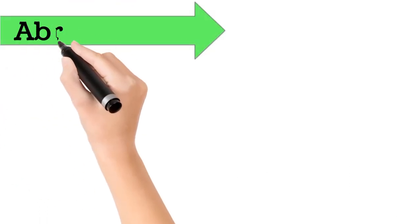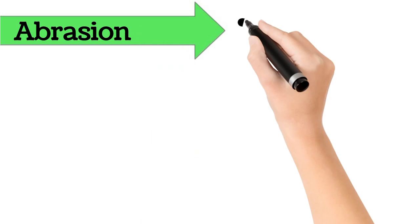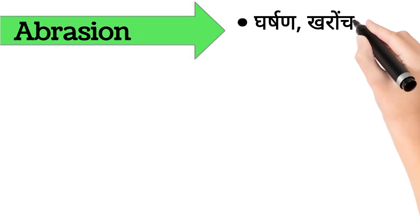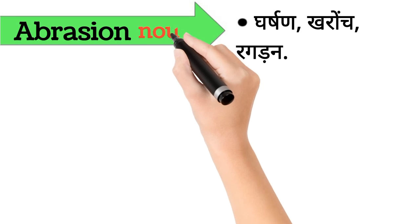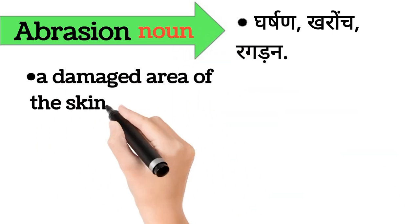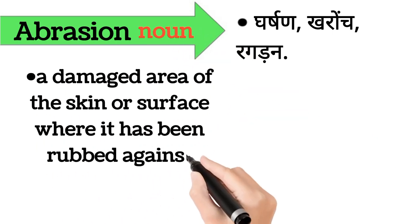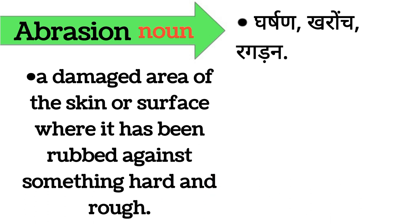Abrasion. Abrasion ka arth hai, gharshan, kharonch, ragaran. Abrasion word noun form mein aata hai. It's also called, a damaged area of the skin or surface where it has been rubbed against something hard and rough.